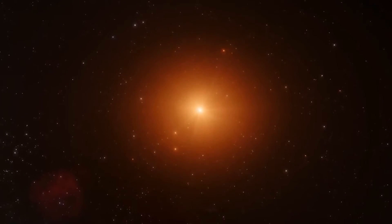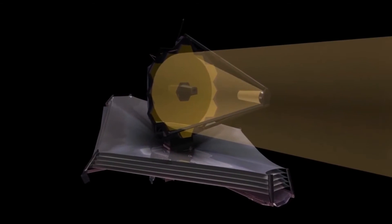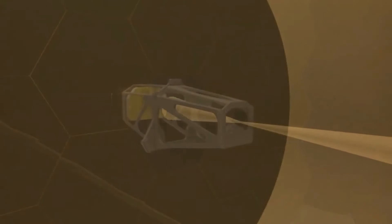This is critical for studying Proxima b because its host star's intense ultraviolet radiation would normally make it difficult to observe in visible light.